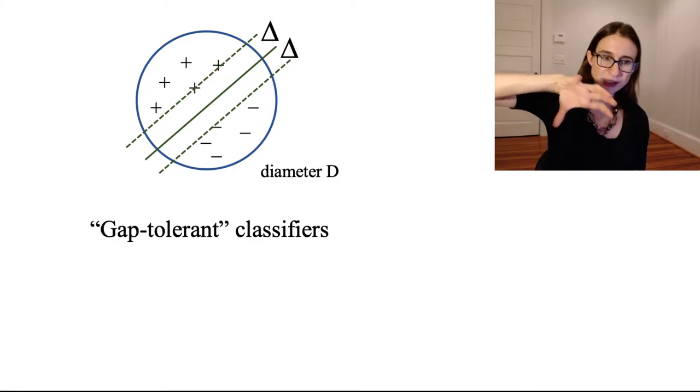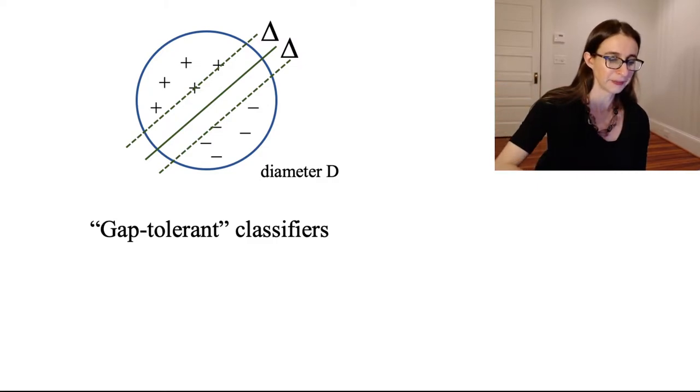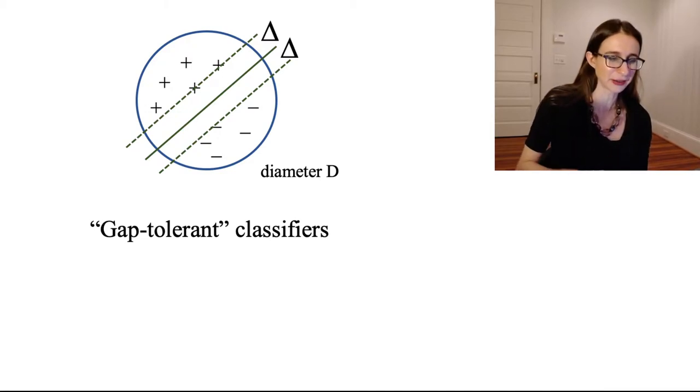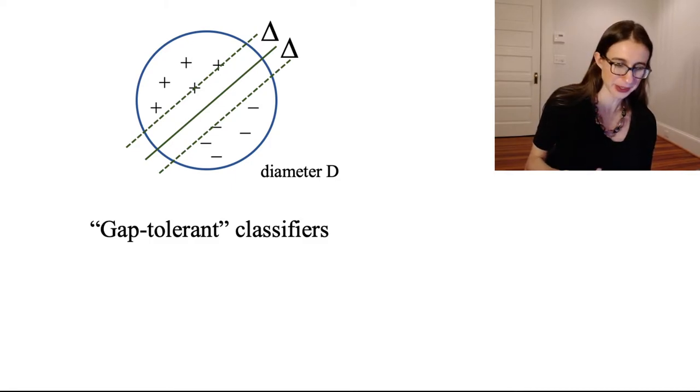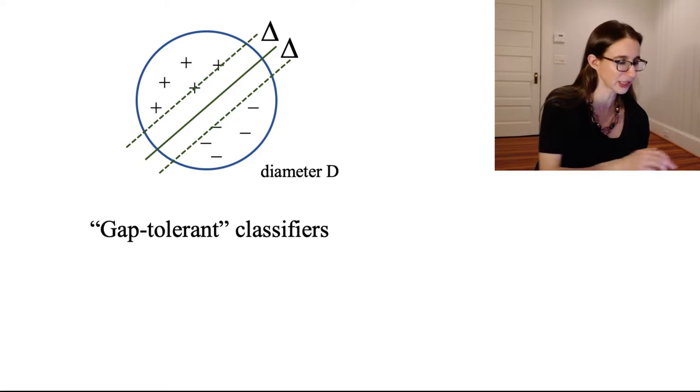but since all the points are restricted to live in this sphere, it kind of prevents you from being able to shatter data. So you can imagine that if we're forced to have these large margins, keeping all the points within the ball, then maybe the class would have lower complexity. There's not so many points that it could classify correctly, so perhaps a lower VC dimension.